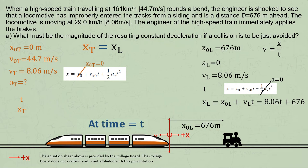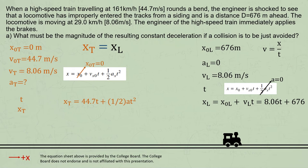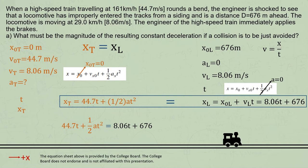We can also use this formula for the train, but now x0 is 0 because we set the origin to be where the front of the train is at t equals 0. That's the moment the engineer applies the brakes. Substituting the numbers in, we get this. Since the displacement must be the same at time t, we can now make these equations equal, giving us this.